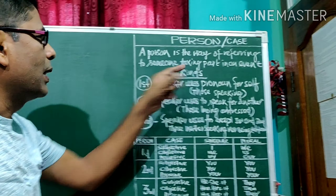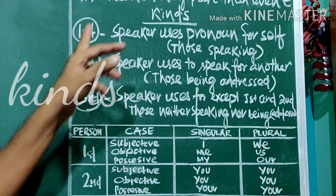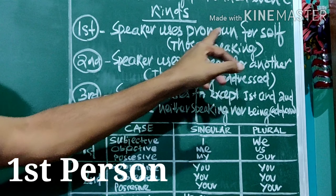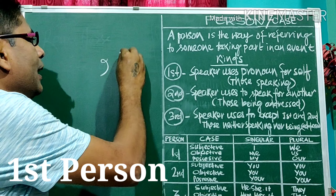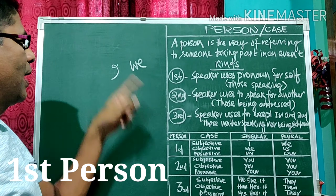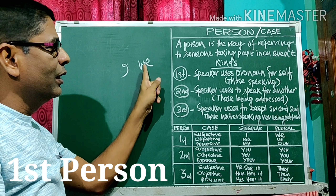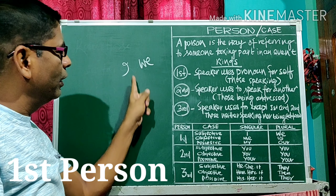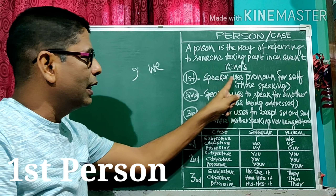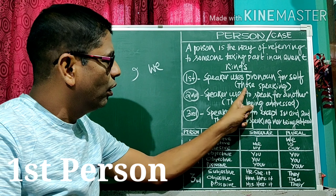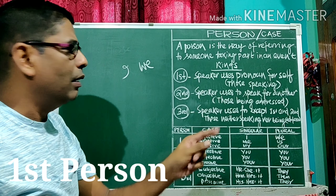What are the kinds of person? There are three kinds of persons: first person, second person, and third person. First person means the speaker uses a pronoun for self. For example, I and we — including the speaker. When I use a pronoun for myself, I use I and we. Those who are speaking are the first person.